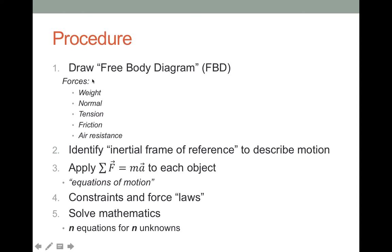We're always going to start first by identifying all the forces acting on all the objects in the problem — drawing what is known as a free body diagram, which I will abbreviate as an FBD. We'll do that by listing the forces that we're going to consider. We're only going to be considering five different forces, so this is a checklist you might just have with you whenever you're doing a Newton's Second Law problem.